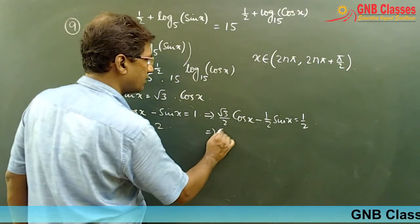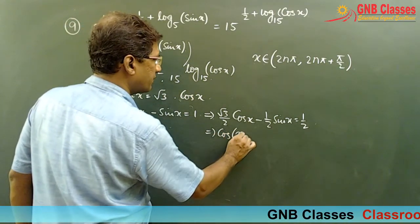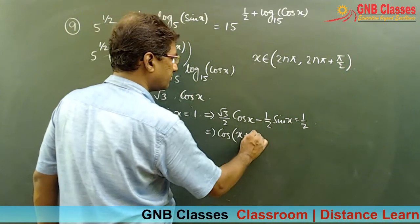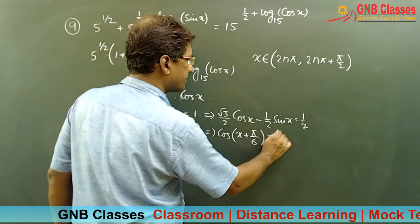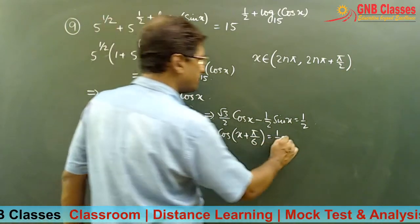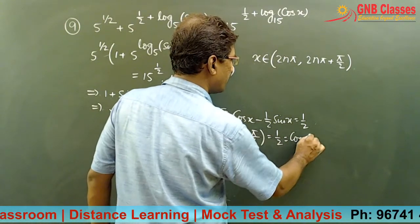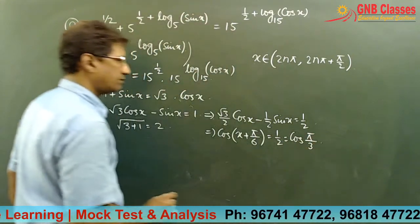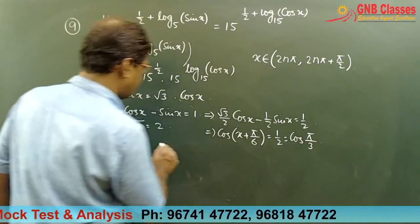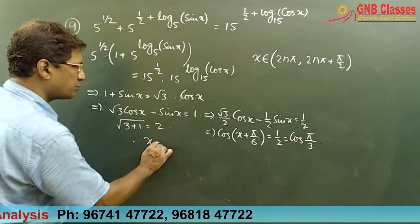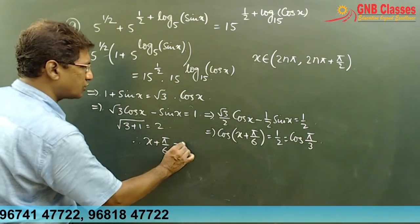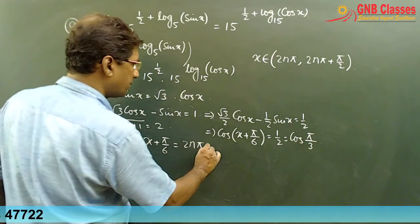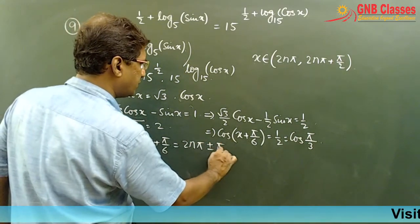So we are getting cos(x + π/6) equals 1/2, which is nothing but cos(π/3). Therefore x plus π/6 equals 2nπ ± π/3.